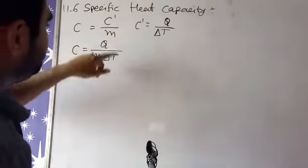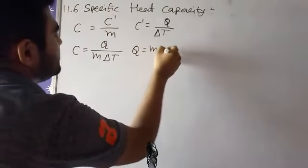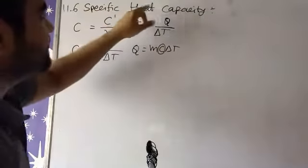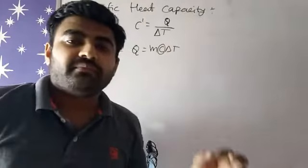If we have the formula, if we make Q the subject, Q becomes Q is equal to m c delta T, and c here is called specific heat capacity, right? So specific heat capacity.